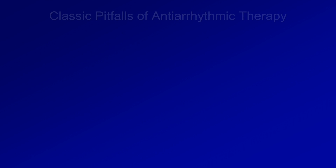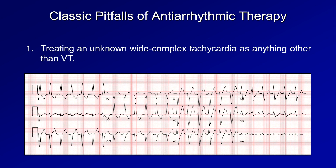Next, I'll discuss three classic pitfalls of antiarrhythmic therapy. The first is the most common: treating an unknown wide-complex tachycardia as anything other than VT. The problem is that physicians who attempt to distinguish wide-complex tachycardias due to VT from those due to SVT with aberrancy face imperfect criteria. The risks from treating a VT as an SVT with aberrancy are much greater than the reverse. So unless you are absolutely positive the wide-complex rhythm is an SVT, choose drugs or cardioversion strategies most appropriate for VT.